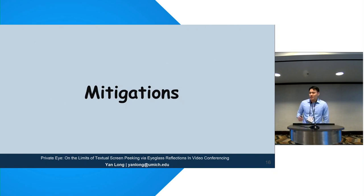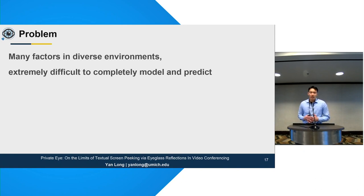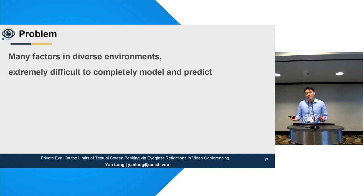Finally, we explored possible mitigations. During our experiments we observed many factors in very diverse environments, making it extremely difficult to completely model and predict the threats you're facing. For example, even with the same eyeglasses and cameras, you could have very different levels of reflection in different rooms due to different lighting conditions. Wouldn't it be nice for a video conferencing platform to provide users with a tool to assess the level of threat they're facing in each session?